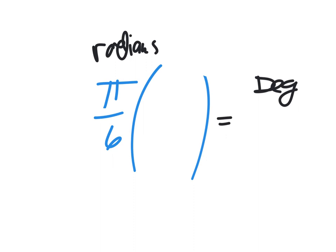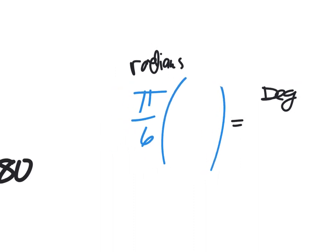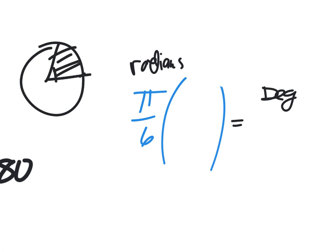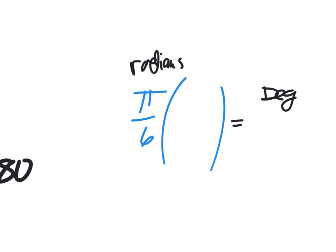Half my job for today is to teach you what radians are, and my other half is to help you use radians to do a couple of things. You're going to use radians to get things changed over from radians to degrees or from degrees to radians. And you're going to have to do simple things like find an area of a sector of a circle.